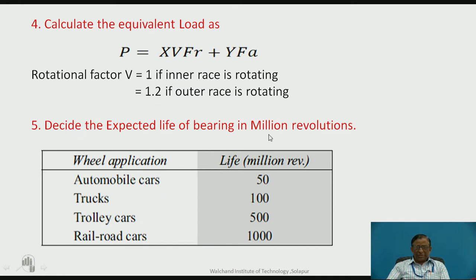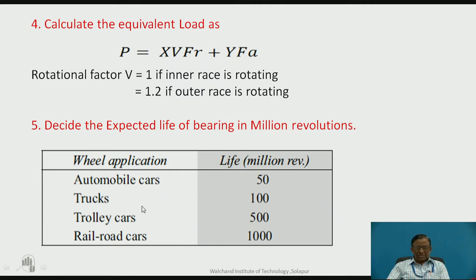Next, decide the expected life of the bearing in million revolutions, because life and load capacity have a direct relationship. To decide the required dynamic capacity, one must first decide the expected bearing life for the particular application. Guidelines are provided for overall economy: for automobiles, cars, trucks, and trolleys, life is expressed as 50 million revolutions or 100 million revolutions. One can select guideline values from charts as per application.